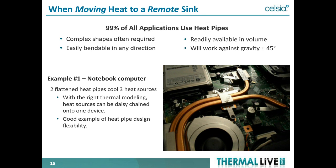When moving heat to a remote heat sink — probably 99% of all applications from a volume standpoint, most being computing applications — complex shapes are often required. Heat pipes can be bent relatively easily, just like copper tubing, and they're available in huge manufacturing volumes — many millions per month. They work against gravity reasonably well: for a laptop application, up to about a 45-degree angle. In the notebook example shown, two flattened heat pipes cool three heat sources by daisy-chaining to move heat from multiple heat sources — fairly common.